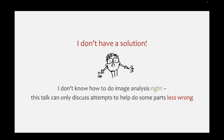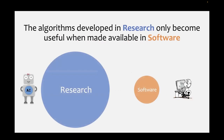I don't have a solution to any of this. I don't know how to do image analysis right. All I can really talk about are attempts to do some parts of image analysis less wrong - that's the goal of my career, to progressively do things a bit less badly than the year before. I don't think it's hopeless, because somehow science involving imaging works. But it is really difficult, and it's more difficult the more you look into it.